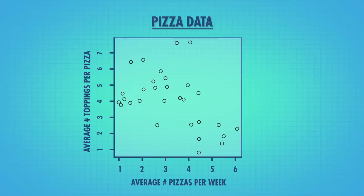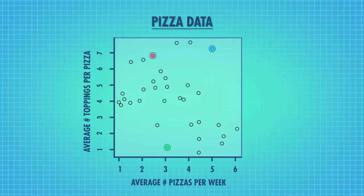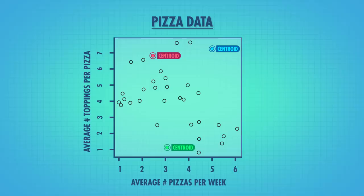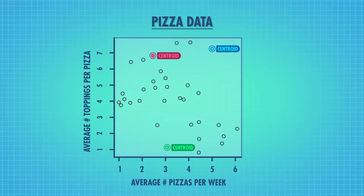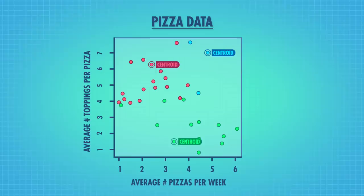First, we plot our data. All we know right now is that we want three separate groups. What the k-means algorithm does is select three random points on your graph — usually these are data points from your set, but they don't have to be. Then we treat these random points as the centers of our three groups, so we call them centroids. We assign each data point — the points in black — to the group of the centroid that it's closest to. Once we assign each point to the group it's closest to, we now have three groups, or clusters.